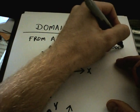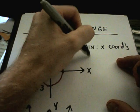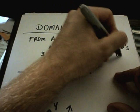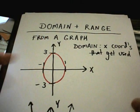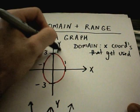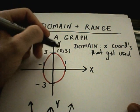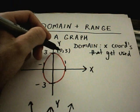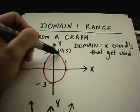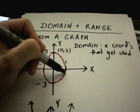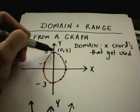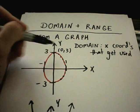Basically, the domain represents all the x-coordinates — all the x-coordinates that get used. For example, at the top this is the ordered pair (0, 3). So 0 is going to be a number in my domain because if I list all the points on this graph, at some point I'm going to use the x-coordinate of 0.